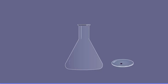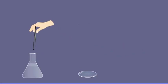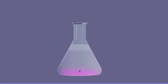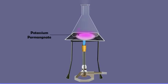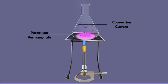Take a flask and fill it half with water. Drop a small crystal of potassium permanganate carefully at the bottom of the flask. The crystal dissolves slowly, forming a purple colored solution around itself. Heat the water at the bottom of the flask using a burner and observe the movement of the hot purple-colored water. You will see purple streaks of hot water rise from the bottom up to the surface, then sink downward near the walls of the flask, showing convection currents transferring heat from bottom to top.